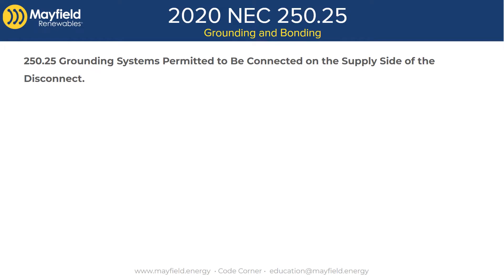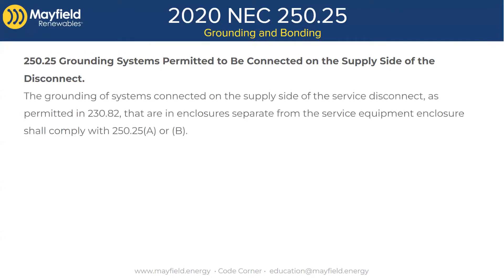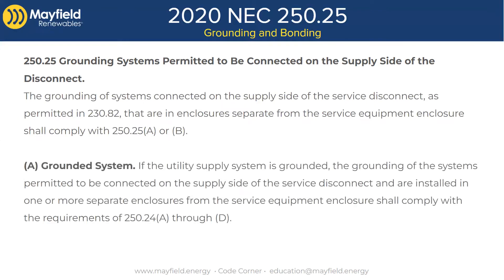The one thing that is missing — it was actually in the code until the very last moment — was some direct rules on grounding and bonding for our systems. But 250.25 is also a brand new section. The title of 250.25 is 'Grounding Systems Permitted to Be Connected to the Supply Side of the Disconnect.' So it is exactly what we were looking for — it's what we needed. It's just not in 705.11.